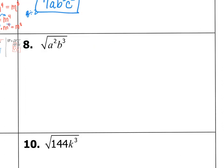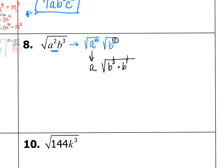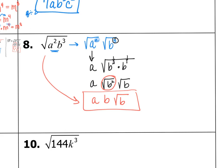In this example we have two bases, so we split up into the square root of a squared and the square root of b to the third. The square root of a squared is simply a, since the exponent is even. For the odd exponent on b, we rewrite b to the third as b to the second times b to the first — down one, then one left over. Splitting them up and keeping a along: the square root of b squared is b with the square root of b left over. So the simplified form is a times b times the square root of b.